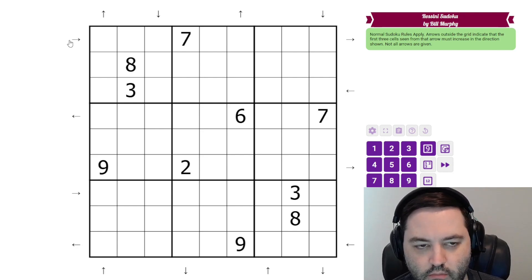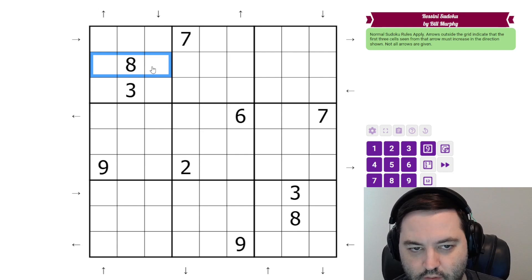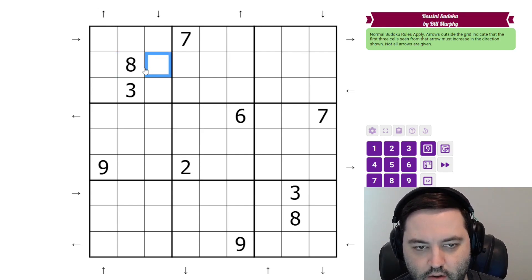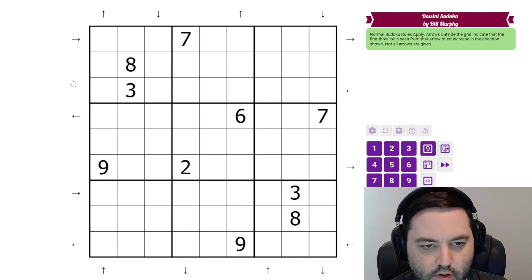So this arrow in row one is pointing left to right, so we increase from left to right. This is smaller than this, which is smaller than this. Ordinarily this variant has a negative constraint, so if you didn't have an arrow, then neither direction could be increasing or decreasing. You'd have to go up, down, or down, up. We don't have that because Bill is being kind. The negative constraint in this variant confuses me every time. So let's get started.